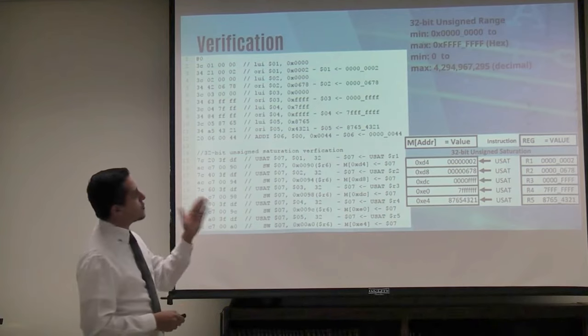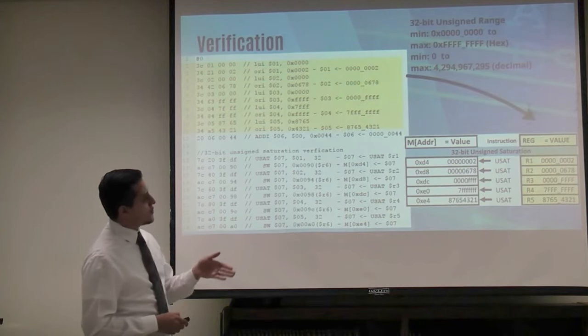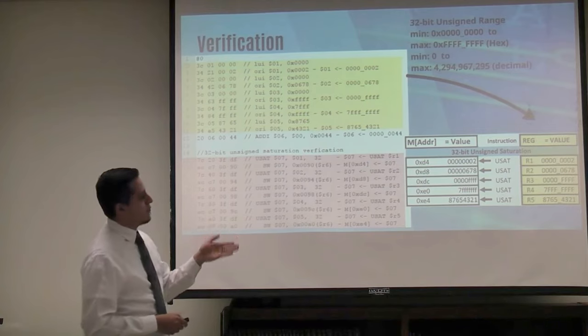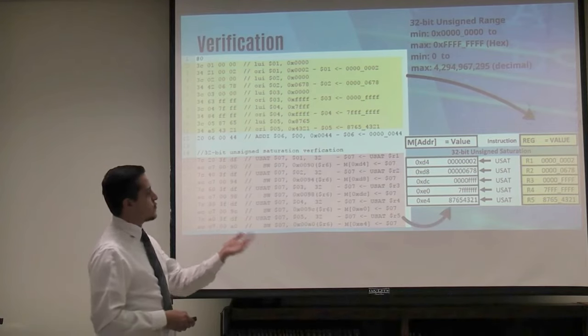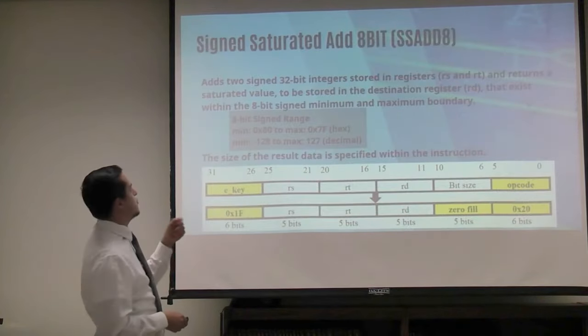For 32-bit unsigned saturation, same concept, bigger range. We load our registers, and all of them are within the range, so we just pass the values to those memory locations.